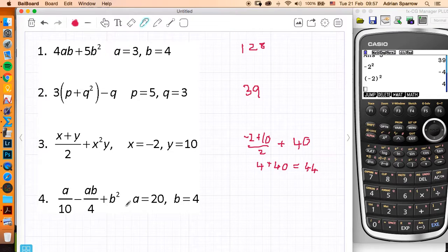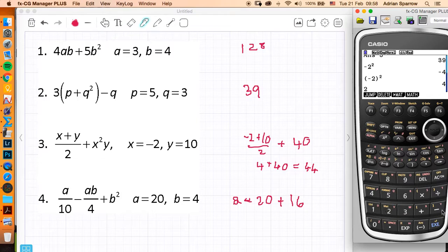Here we're going to do this one first, so we're going to get 16 at the end, so we're going to have 20 divided by 10, which is 2. We're going to have 20 times 4 divided by 4, which is going to give me minus 20, so I've got 2 minus 20. Add d squared, which is 16, so I'm going to have 2 take away 20 plus 16. Remember I do this all together, and I end up with minus 2 at the end of my final answer.